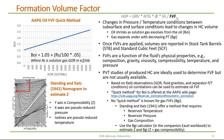Formation volume factor accounts for the difference in the hydrocarbon volume between the subsurface and surface conditions. Changes in temperature and pressure between subsurface and surface conditions lead to changes in hydrocarbon volume. Oil shrinks as the solution gas exsolves from the oil — we call this B sub O sub I. Gas has a tendency to expand under decreasing pressure and temperature conditions, and this is called B sub G sub I.